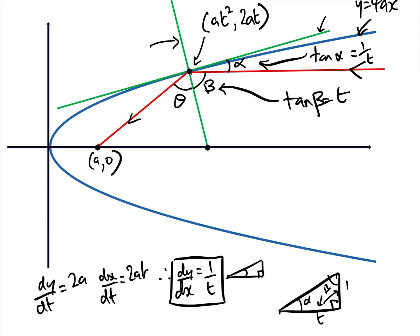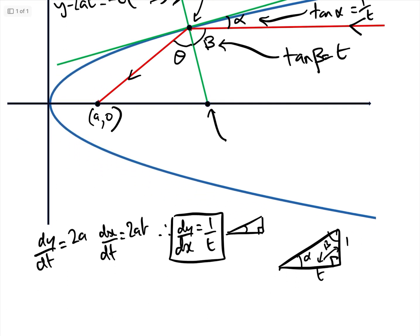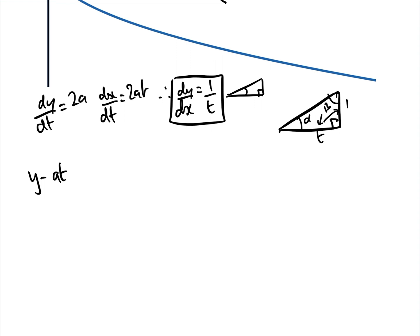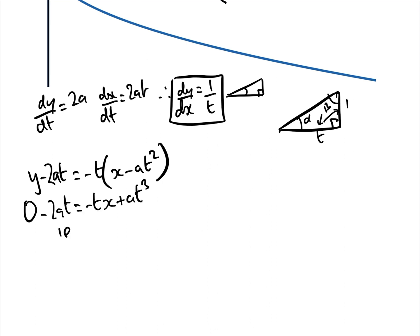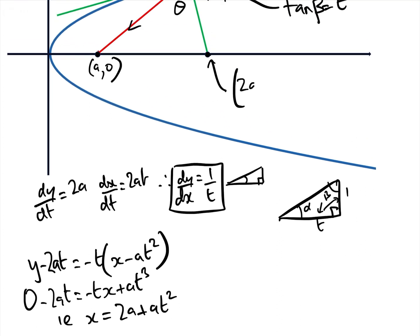Now we need to prove tan(theta) = t. The gradient of the tangent is 1/t, so the gradient of the normal is −t. The equation of the normal is: y − 2at = −t(x − at²). We want to find where this normal hits the x-axis, so we set y = 0: −2at = −t(x − at²), which gives x = 2a + at². So this point on the x-axis is (2a + at², 0).